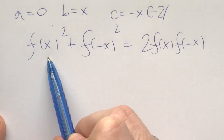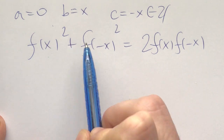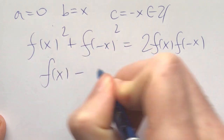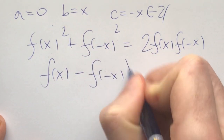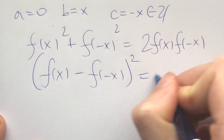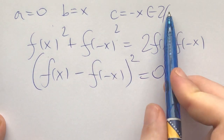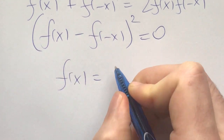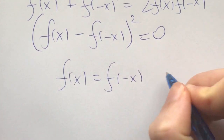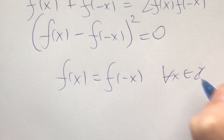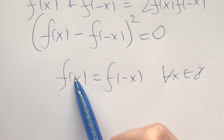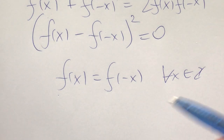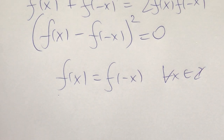Take 10 seconds and think about what this means. Well, this just means that (f(x) − f(−x))² = 0 for all integers x, which means f(x) = f(−x) for all integers x. This tells us we can focus all our attention on the positive integers.